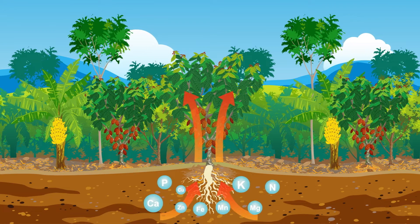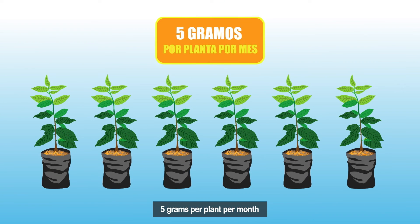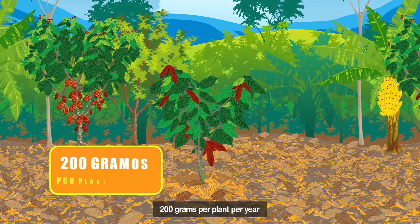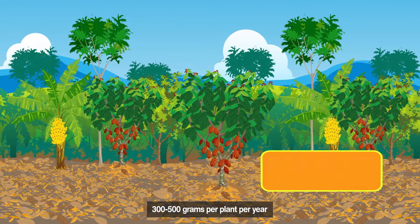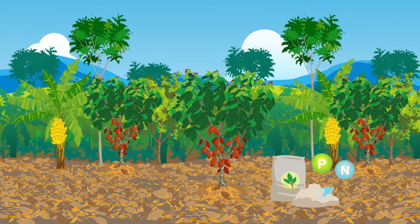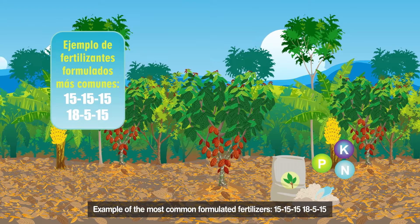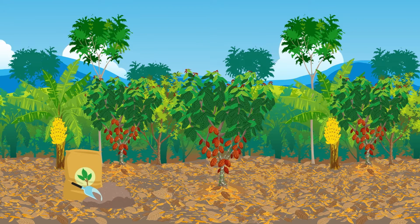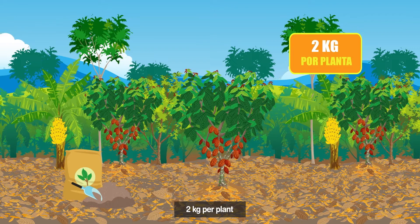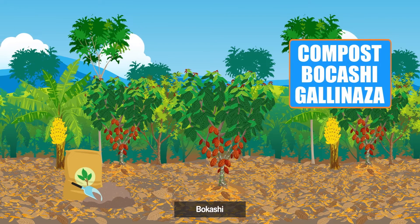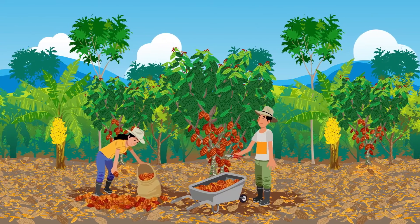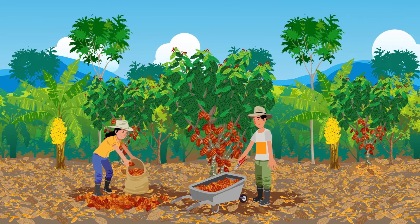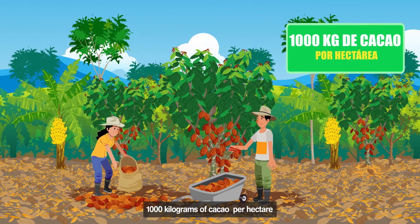A general recommendation is to apply 5 grams of fertilizer per plant per month in the nursery stage, from a common formulated fertilizer. In growing plantations, we can apply 200 grams per plant per year, and in production plantations, between 300 and 500 grams per plant per year. It is ideal to use fertilizers that have nitrogen, phosphorus, and potassium, such as 15-15-15 or 18-5-15. If organic fertilizers are to be used, at least 2 kilograms should be applied per plant per year, using compost, bokashi, or chicken manure, which have the highest possible content of nitrogen and potassium. With these fertilizations and good pruning, the aim is to produce close to or greater than 1,000 kilograms of cacao per hectare per year.